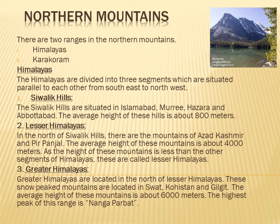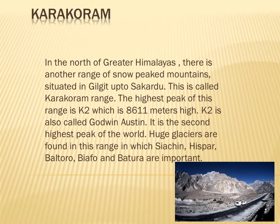Next is Greater Himalayas. The Greater Himalayas are located in the north of the Lesser Himalayas. These snow-peaked mountains are located in Swat, Kohistan and Gilgit. The average height of these mountains is about 6000 meters. The highest peak of this range is Nanga Parbat.